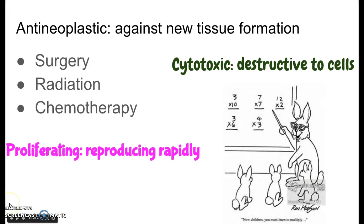Most of the cells in our body are not rapid reproducers — they only reproduce when one of them gets too old and dies. That makes chemotherapy a really targeted type of treatment because it only goes after rapidly dividing cells, which is exactly what cancer cells do. Their crowd control button doesn't work and their auto-destruct button doesn't work, so they are reproducing very rapidly.